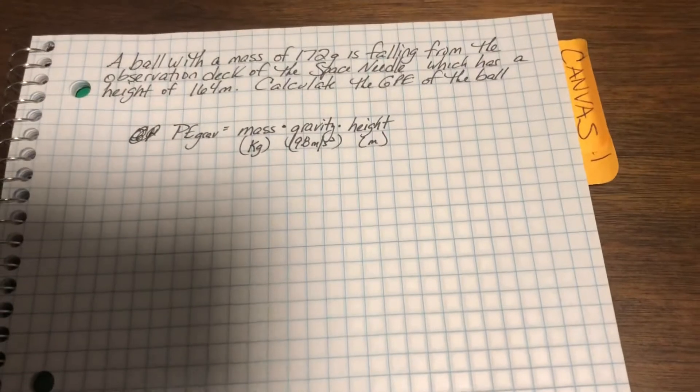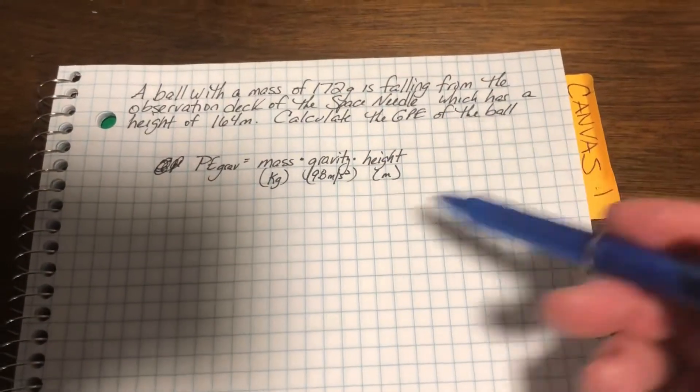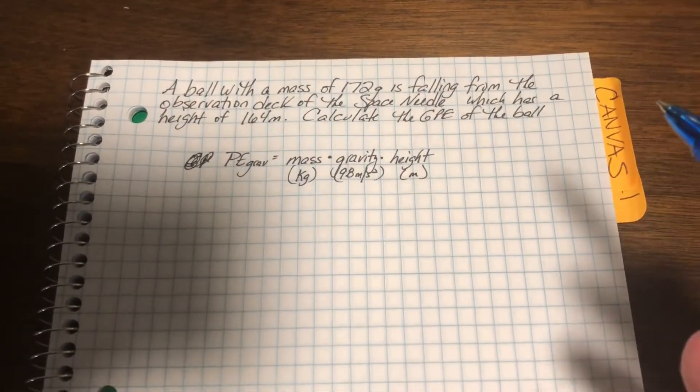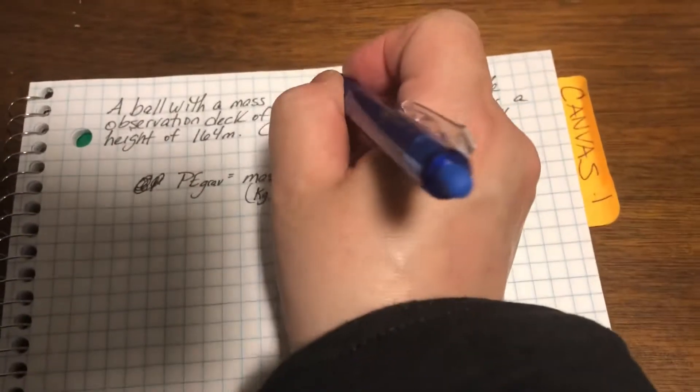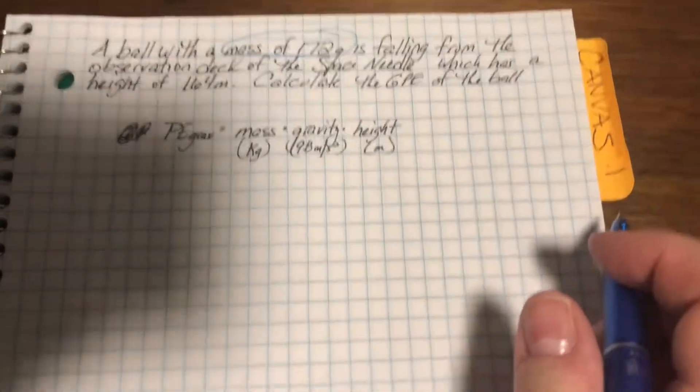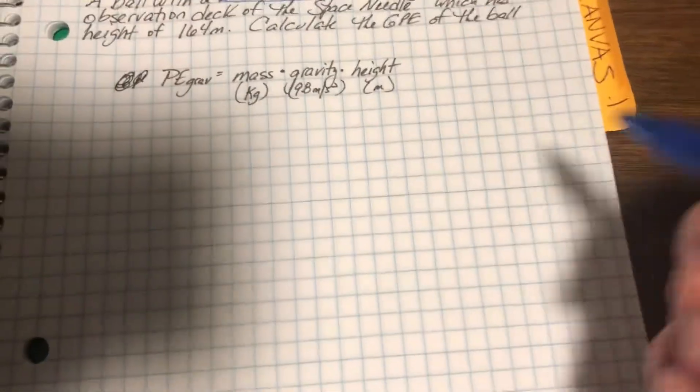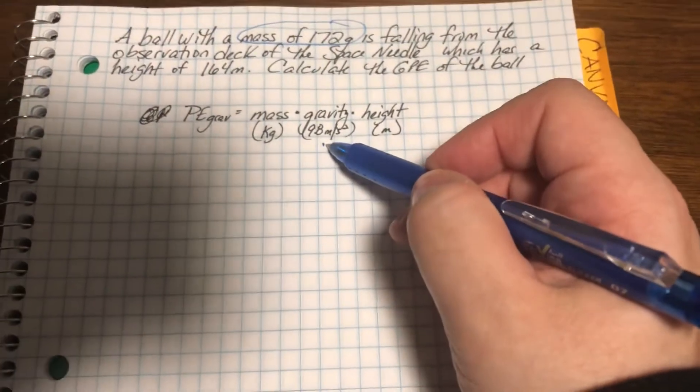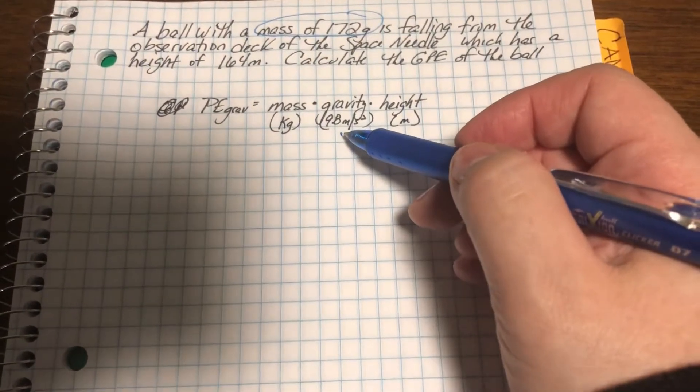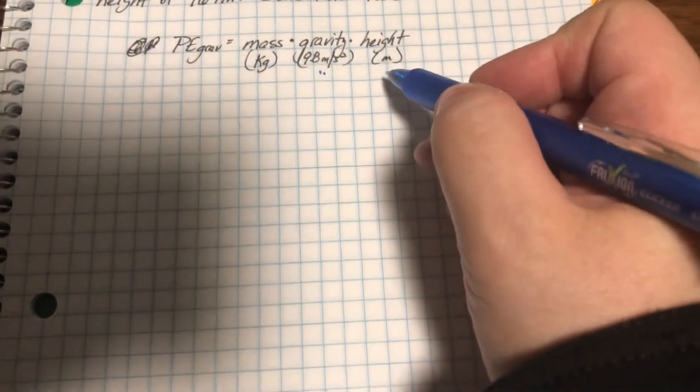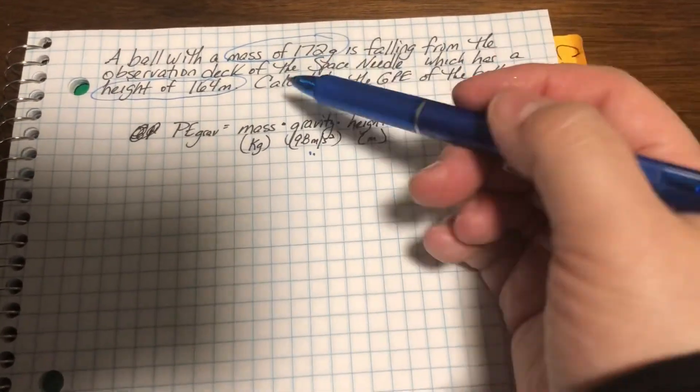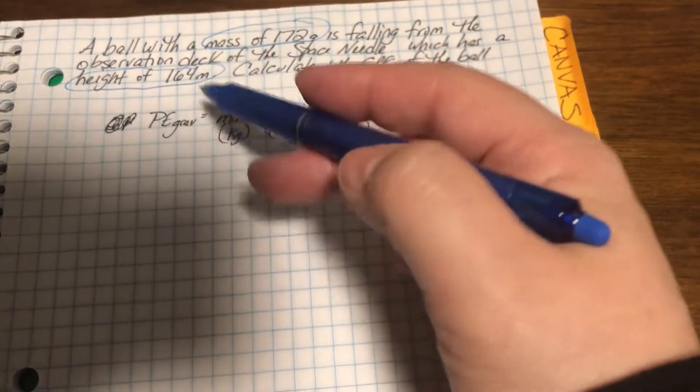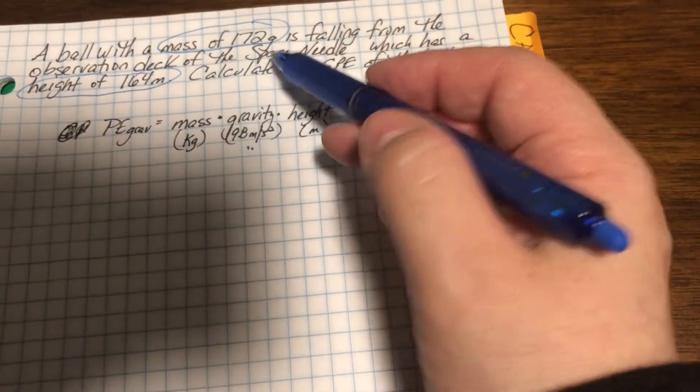So one of the first things I like to do is find my values that I'm going to plug into my formula. So we need mass. Here's mass. So let's circle that or highlight it. And then I already know gravity, because gravity on Earth is always a constant of 9.8 meters per second squared. And we need the height, which is telling us height of 164 meters. Now, every problem isn't always going to say mass or height. So knowing your units is going to be super important.